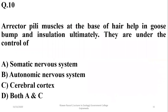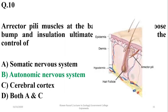Question 10: Arrector pili muscles at the base of hair help in goosebumps and insulation. They are under the control of the autonomic nervous system. These muscles, found at the base of hair, ultimately help in hair erection during goosebumps.